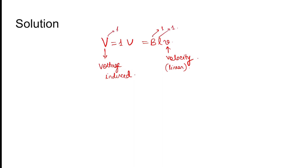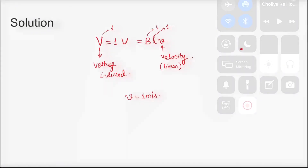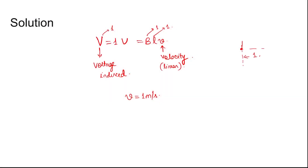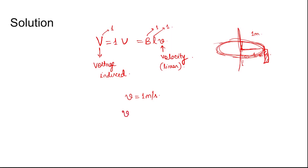Since B=1, L=1, and induced voltage=1, we get v equal to 1 meter per second. Now the conductor is at a distance of 1 meter from the z axis — this is a disc-like structure with the conductor placed at radius r equals 1 meter. Using v equals omega times r, with v=1 and r=1, omega equals 1 radian per second.